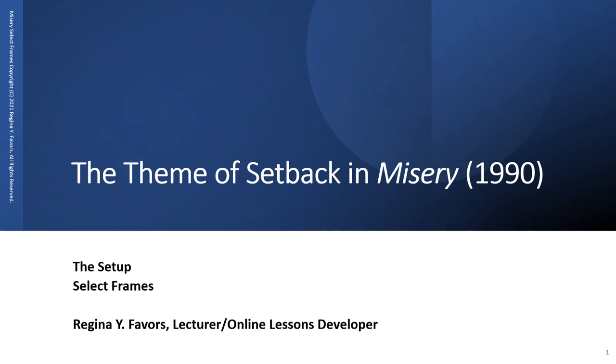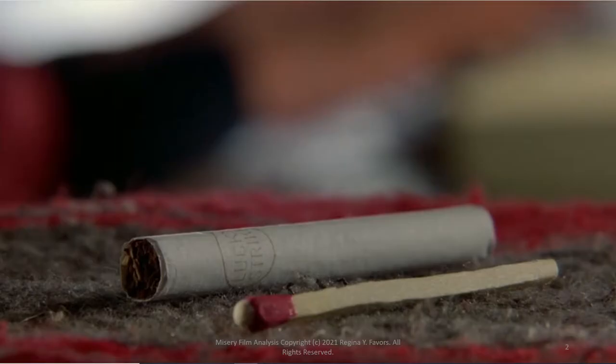This is the theme of setback and misery. The setup uses select frames — the first image we get in the film is the opening scene: a cigarette and a lighter. We don't really know why we are getting this image, but prior to this we get typing sounds, so we have to assume that someone is typing. The typewriter is not typing by itself.